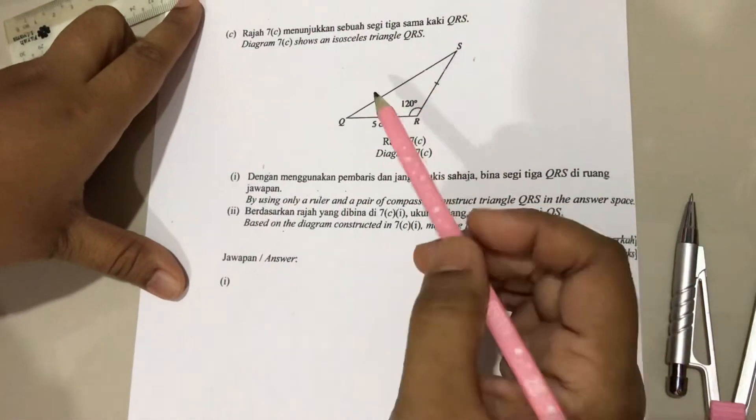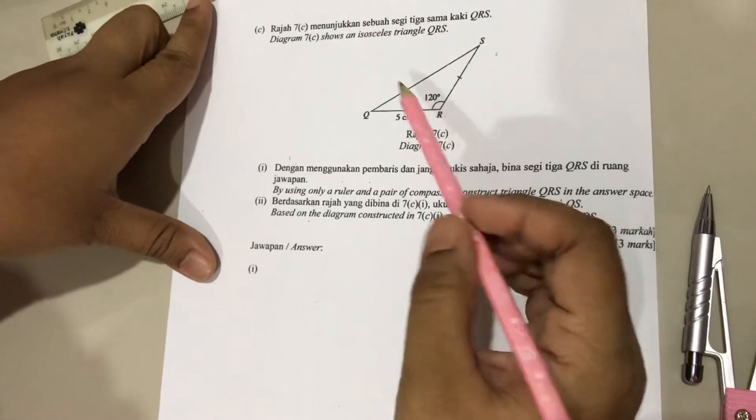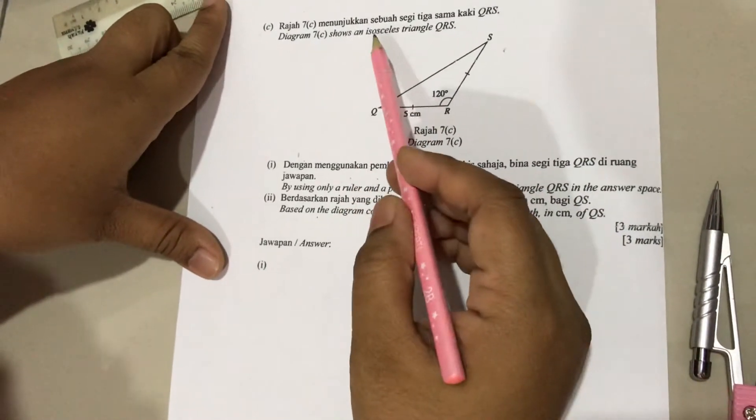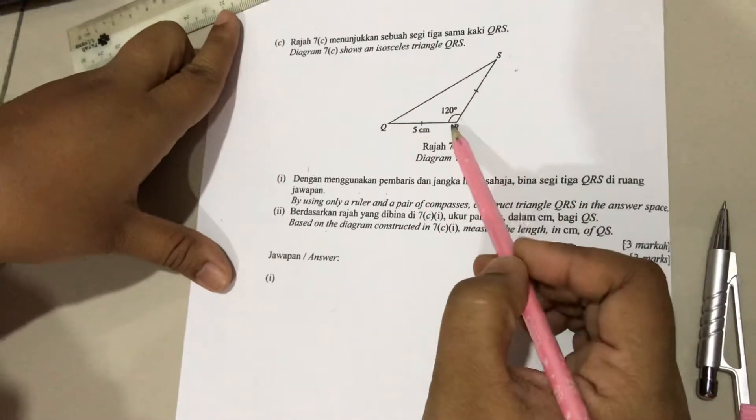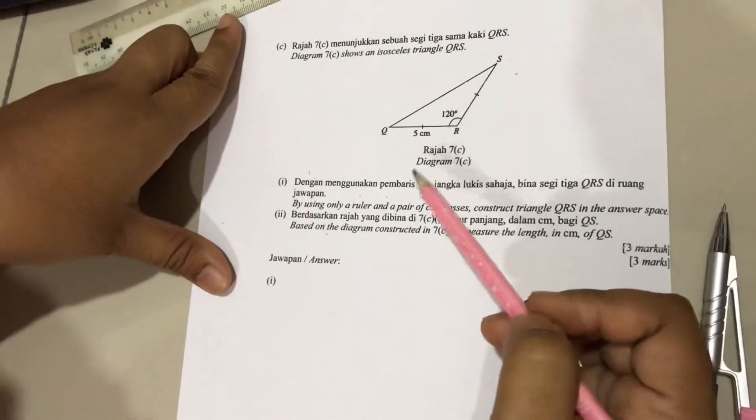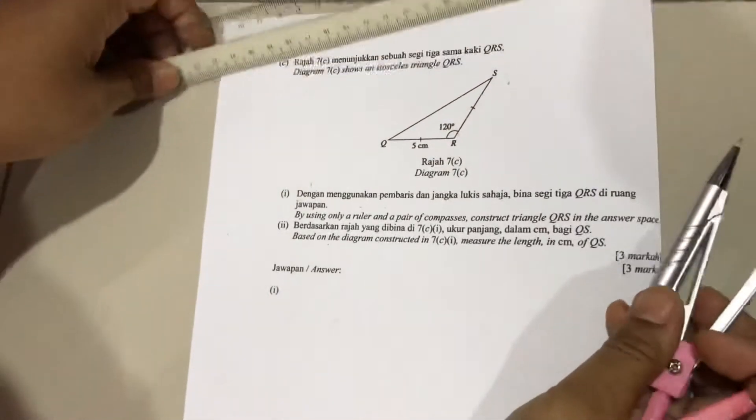Hi girls. For this question on geometrical construction, we need to construct this triangle. The diagram shows an isosceles triangle QRS with angle R at 120 degrees. Using ruler and compasses, construct QRS.